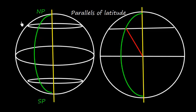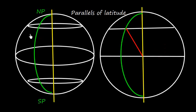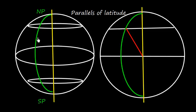Let me define latitude. The latitude of a place is the arc of meridian. Suppose this is the parallel of latitude — at this parallel of latitude, all points will have the same latitude. Suppose this point is A. The latitude at place A is the arc of meridian. This is the North Pole and this is the South Pole. This semi-great circle joining them is called the meridian.